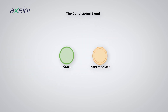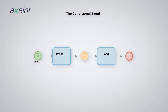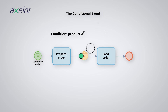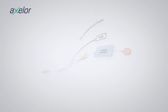The conditional event. These are events represented with a document pictogram. They are triggered by the evolution of a condition that changes to a true condition. For this example, as soon as the order is confirmed, a token is created, which will go through the preparation activity and wait at the intermediate event for the carrier to arrive. Only when this condition is met does the process continue and the token advances through the process.